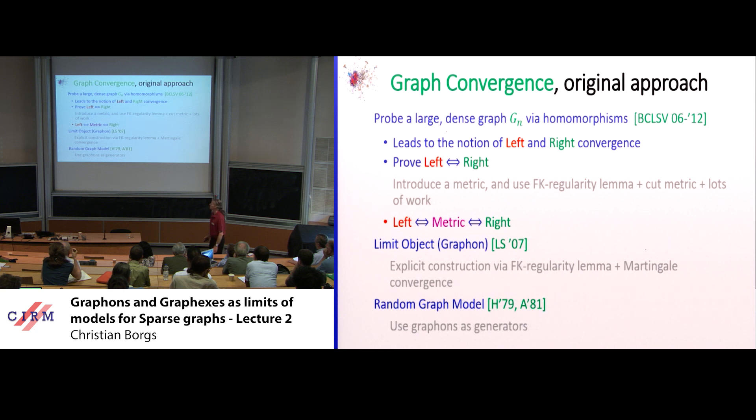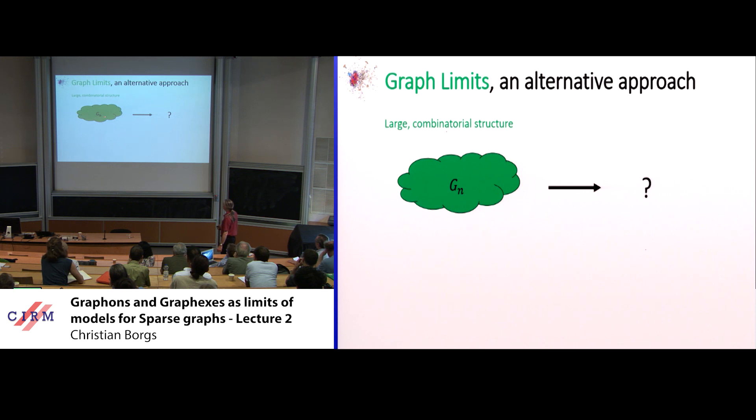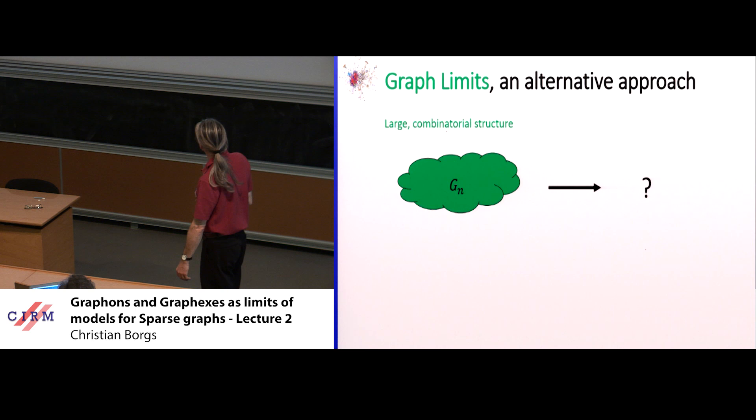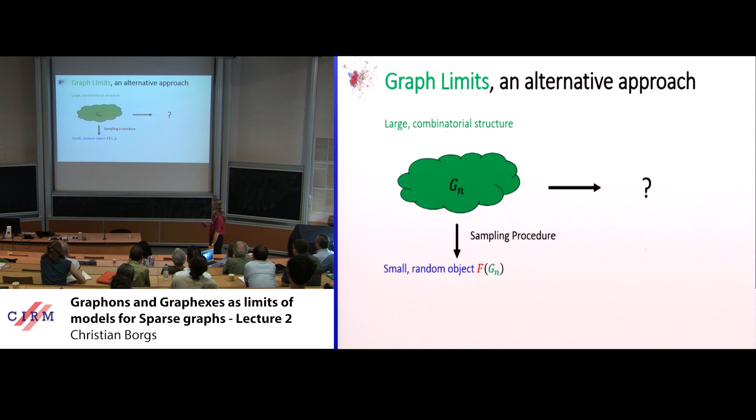Now I want to introduce a very different idea about graph convergence. Assume you have a large graph — in general it could be some arbitrary geometric or combinatorial structure, a sequence of numbers, permutations. You have this large structure and want to define some kind of limit, but you don't really have access to it because it's huge. So instead you have some sampling procedure which gives you a small object.